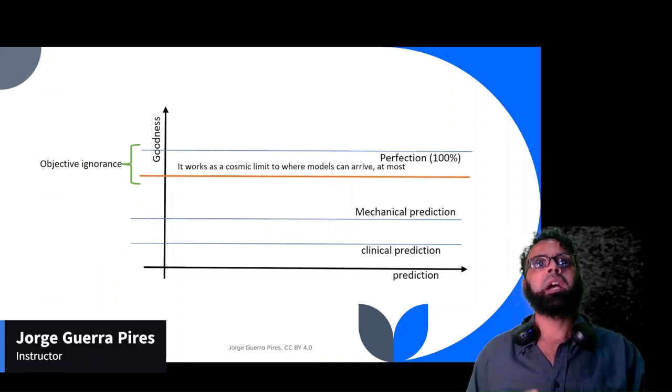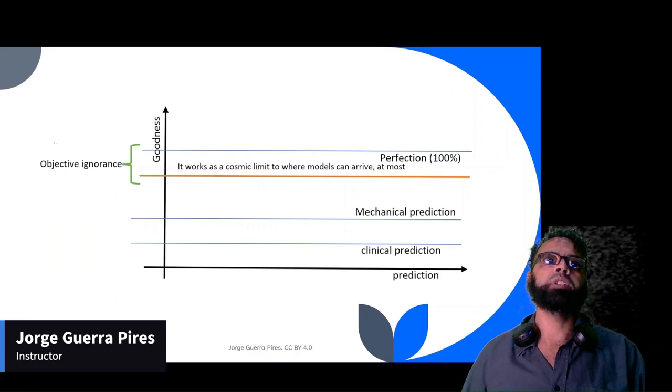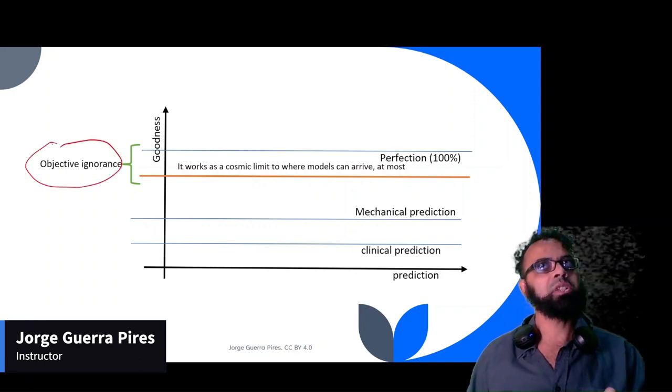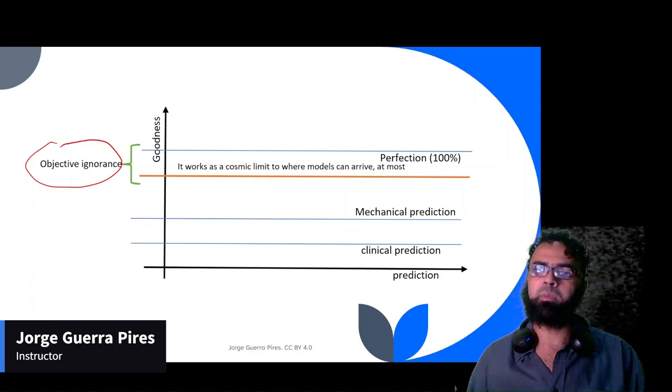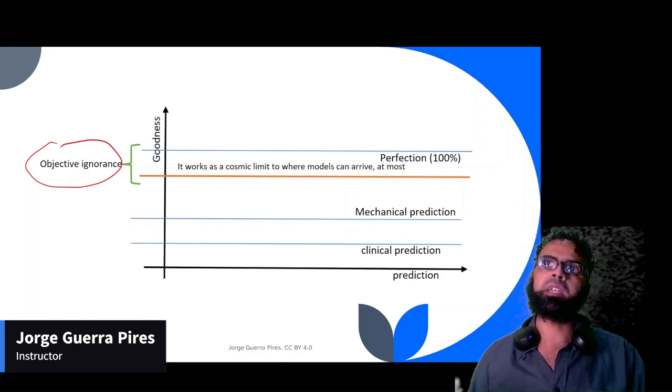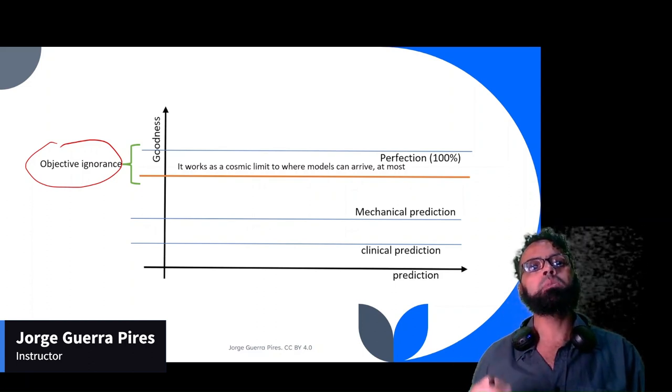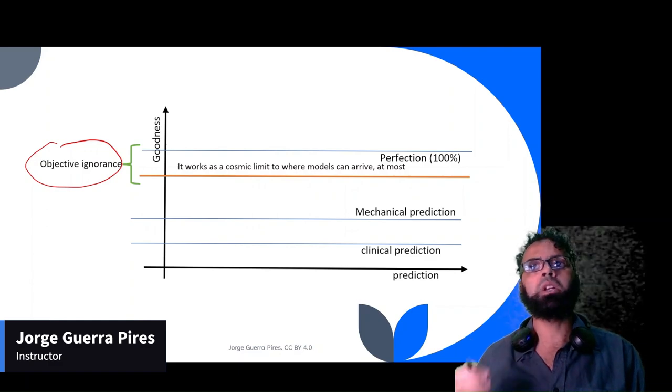On the theory of Daniel Kahneman, what he likes to call objective ignorance. Why do I mention that? Because if you want to use your model for decision-making, most of the time when they use models for decision-making, your model will be unable to know everything. It doesn't matter how good your model is.